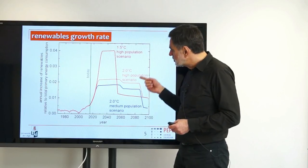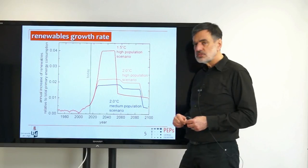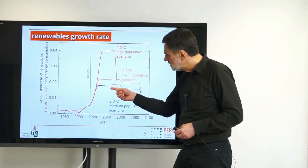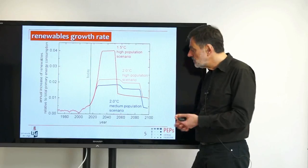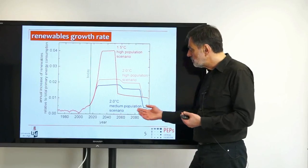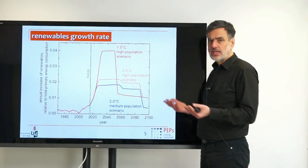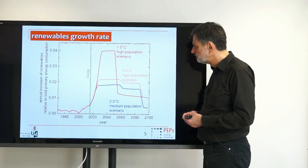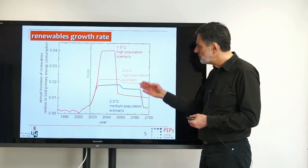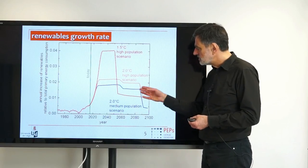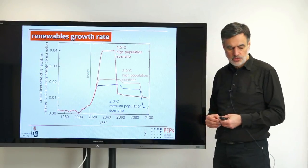If we shift from the high population scenario to the medium population scenario, there is again a significant decrease in pressure on our resources. The overall performance is similar between scenarios — only the level is lower for the medium population scenario.